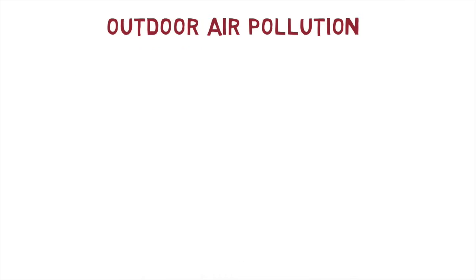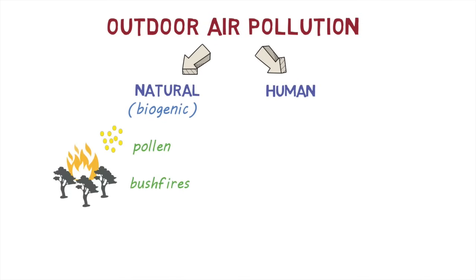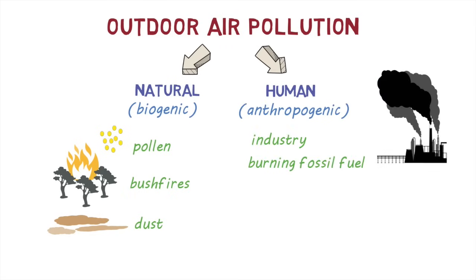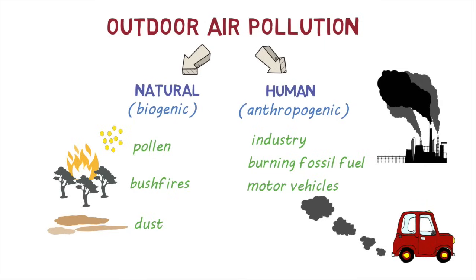Let's take a look at outdoor air pollution first. The outdoor air can be polluted by natural sources or human sources. Natural or biogenic sources of air pollution include pollen, bushfires or dust from deserts. Pollution of the air from human sources, also called anthropogenic air pollution, is commonly due to industries, burning of fossil fuels and the use of motor vehicles.